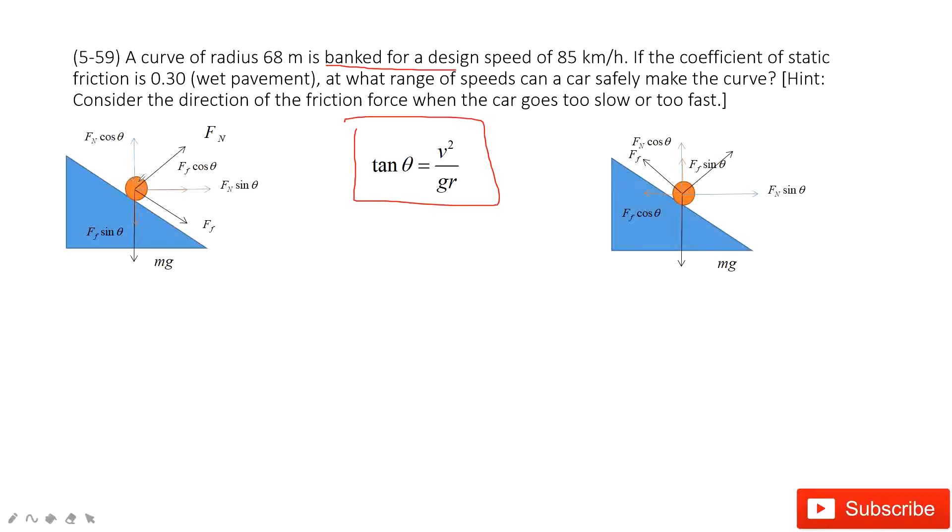So the car has a tendency to move up, so the friction is down along this slope. And then we project the friction in x component and y component.